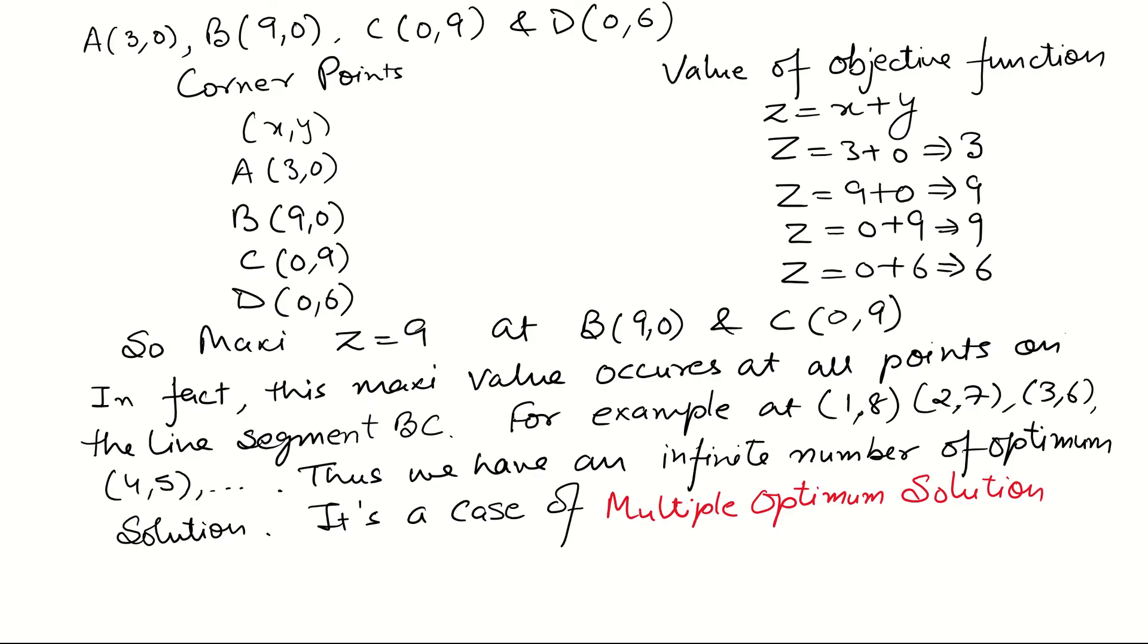The corner points are (3,0), (9,0), (0,9), and (0,6). We check all these corner points and calculate the value of the objective function. At A, value z is 3. At B, value z is 9. At C, value z is 9. At D, value z is 6.